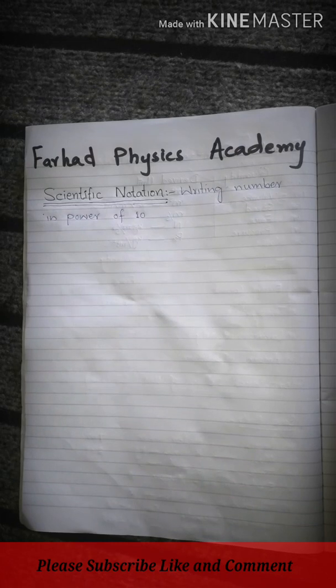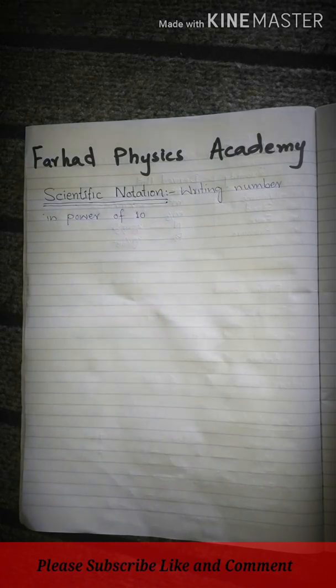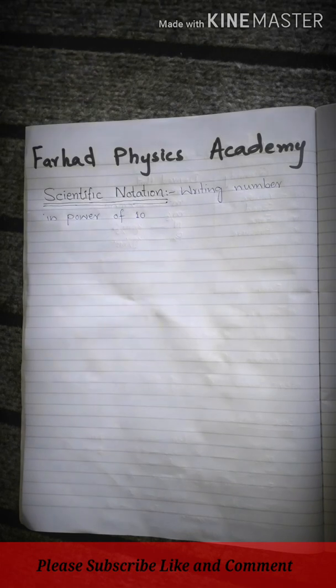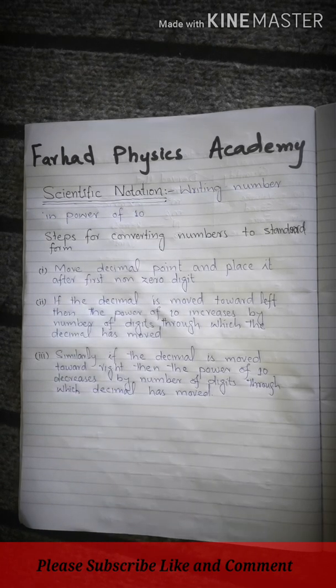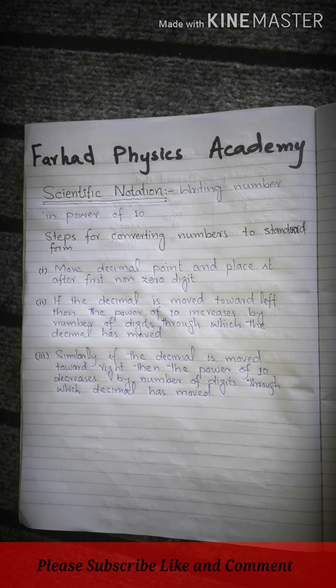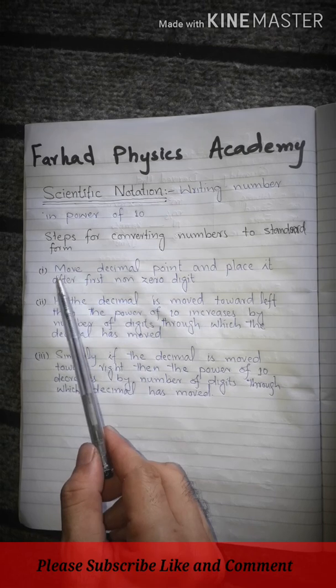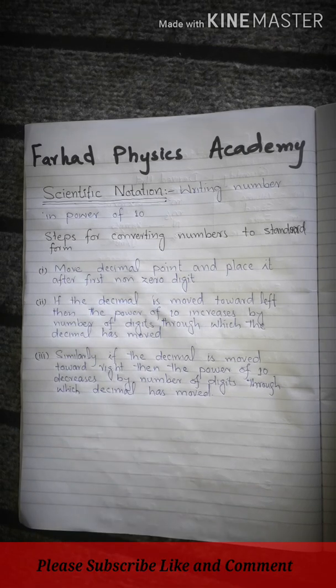How do we write scientific notation? There are certain steps. We will follow these steps one by one. When a number is in scientific notation or standard form, we will follow these steps to convert it. The first step is: whatever number we have, suppose we have a number, a large number.